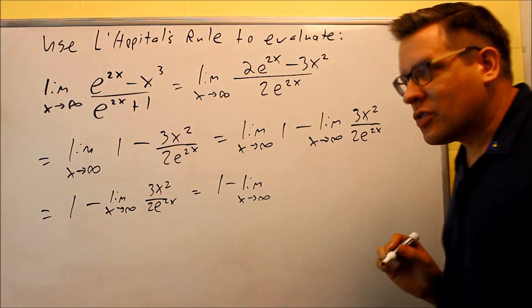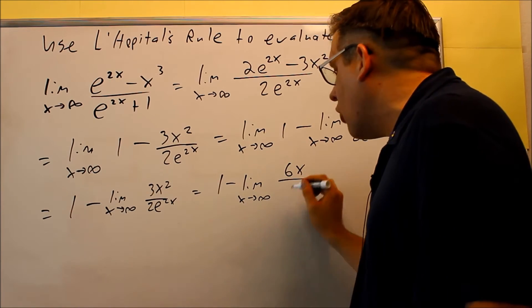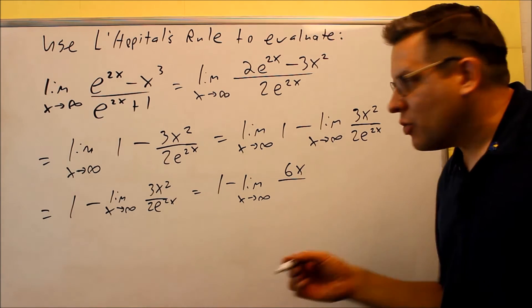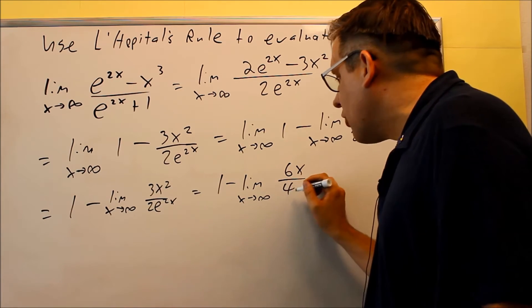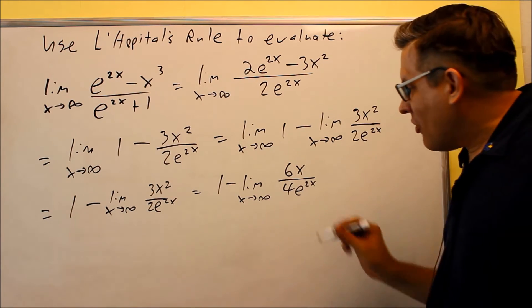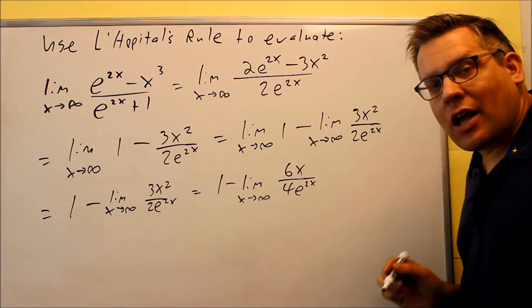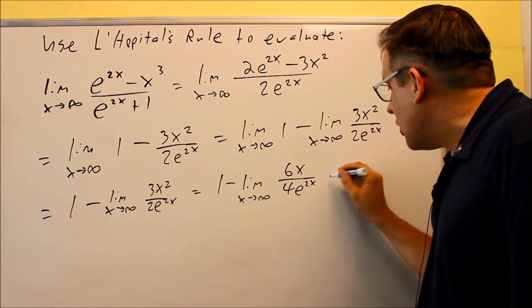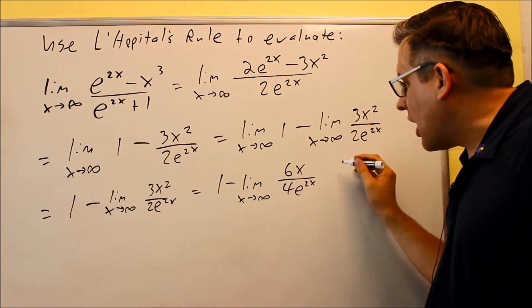So now I have 1 minus the limit x goes to infinity and I do a derivative of this again. So I get 6x on top over, okay, e to the 2x, that derivative is 2e to the 2x. We already have a 2 there, which means there will be a 4 that comes out front. And so I get this. If I put infinity in here, once again I get infinity over infinity. So that means I need to do another time derivative of top and bottom.